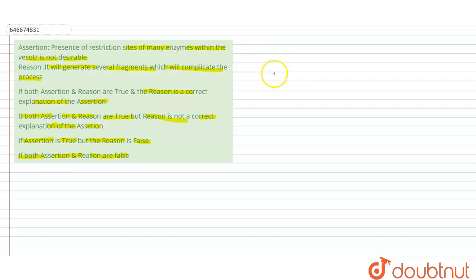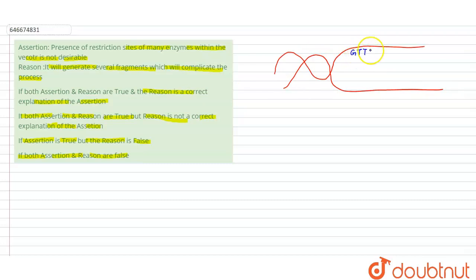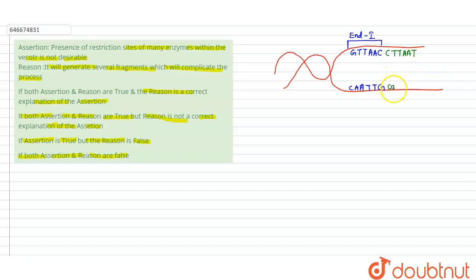Suppose we draw a DNA like this. At one site, a recognition sequence is present — suppose GTTAAC here, and CAATTG here. This is the recognition sequence of one of the endonucleases — let's call it Endonuclease 1. Now the second recognition sequence is given as CTTAAT here and GAATTC here. So here also one recognition site is produced for Endonuclease 2.